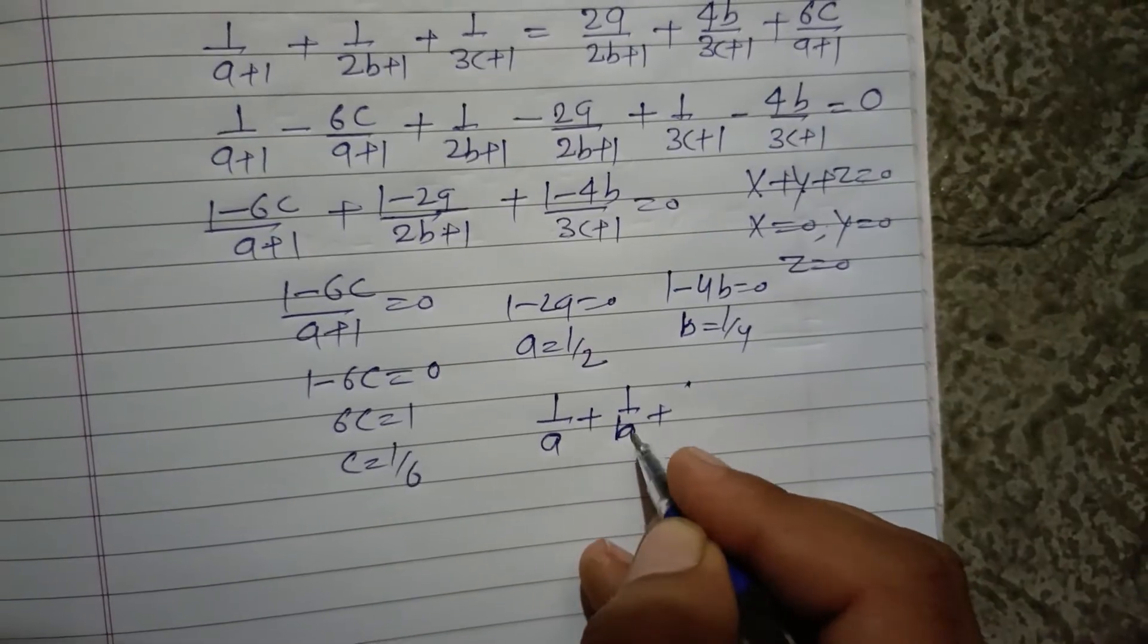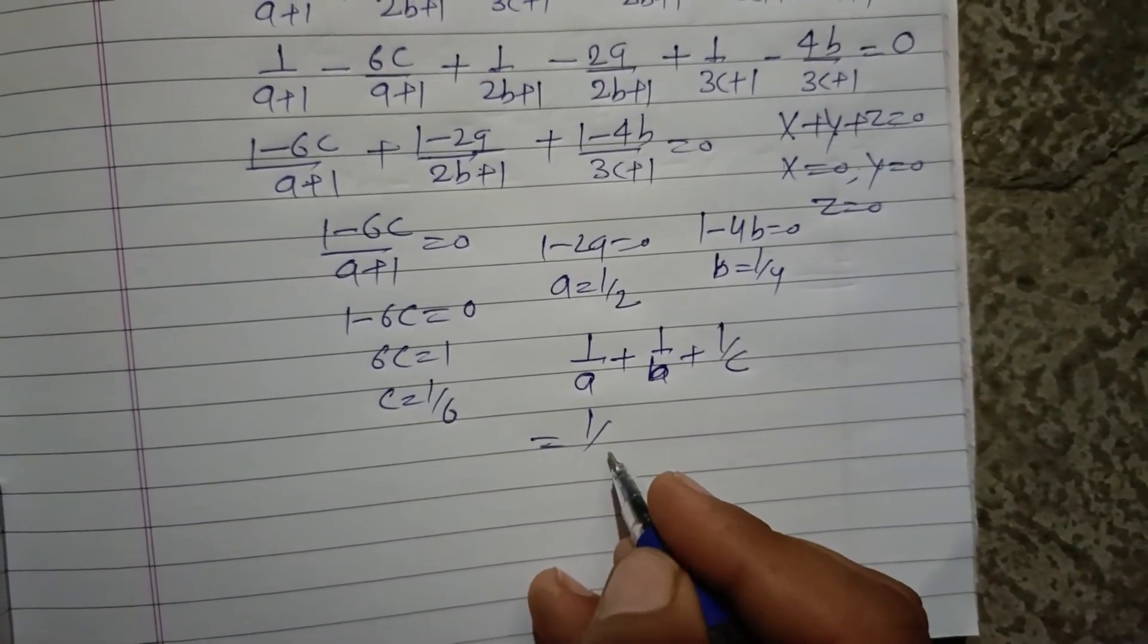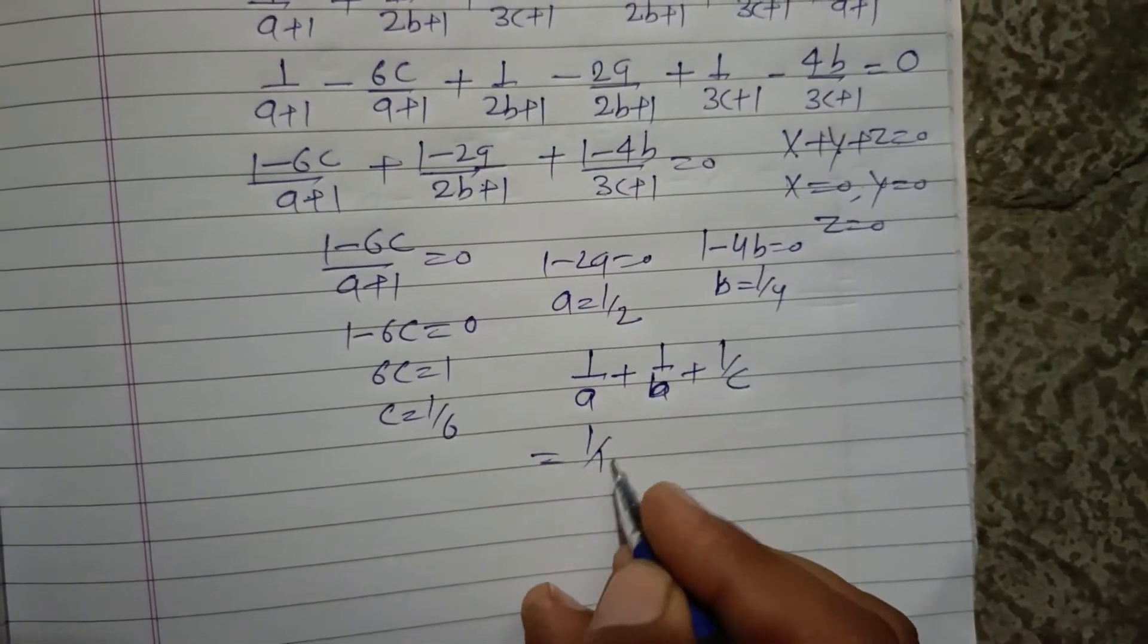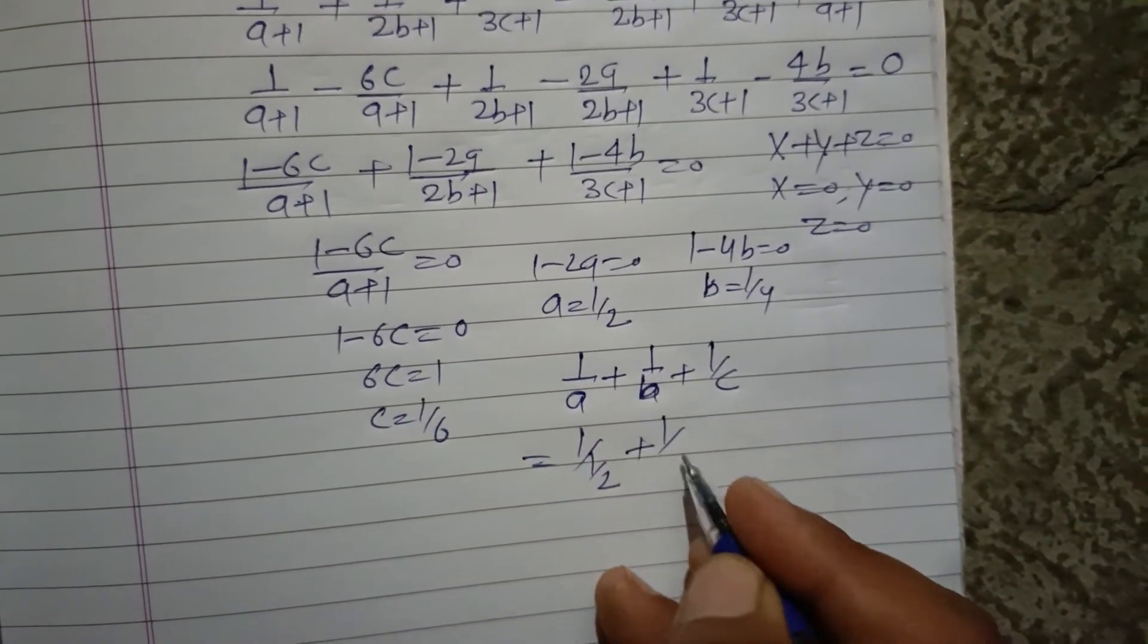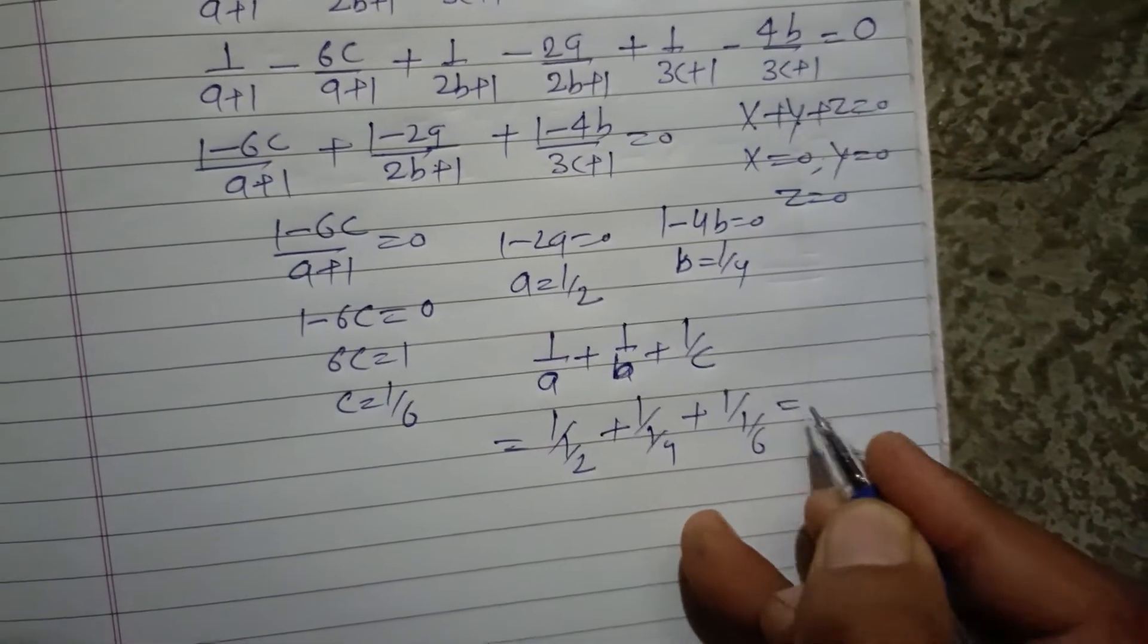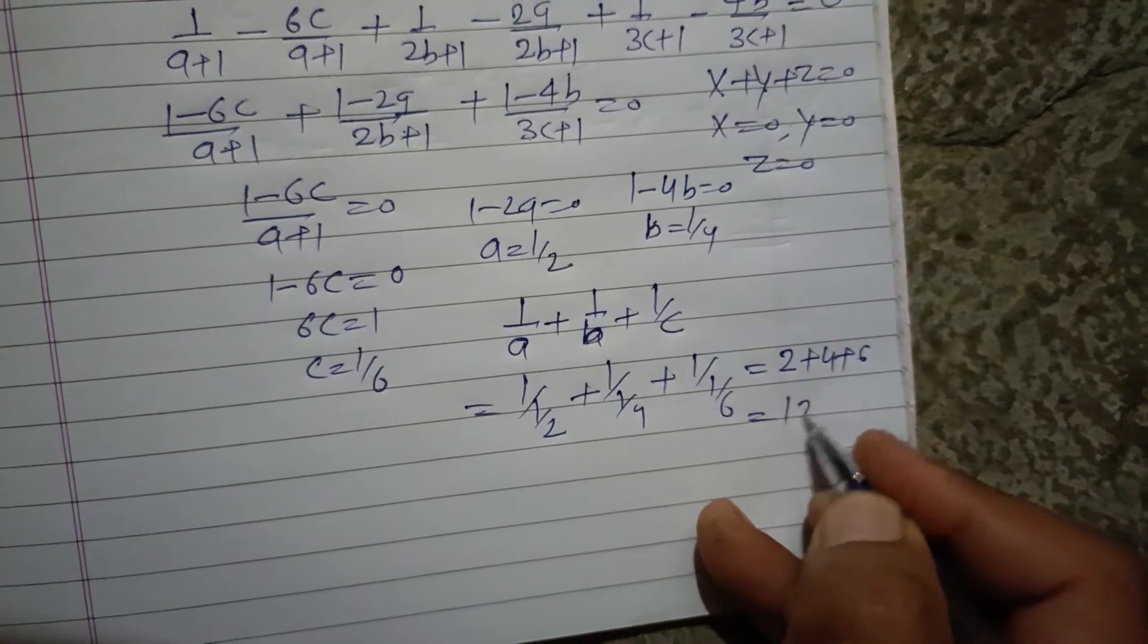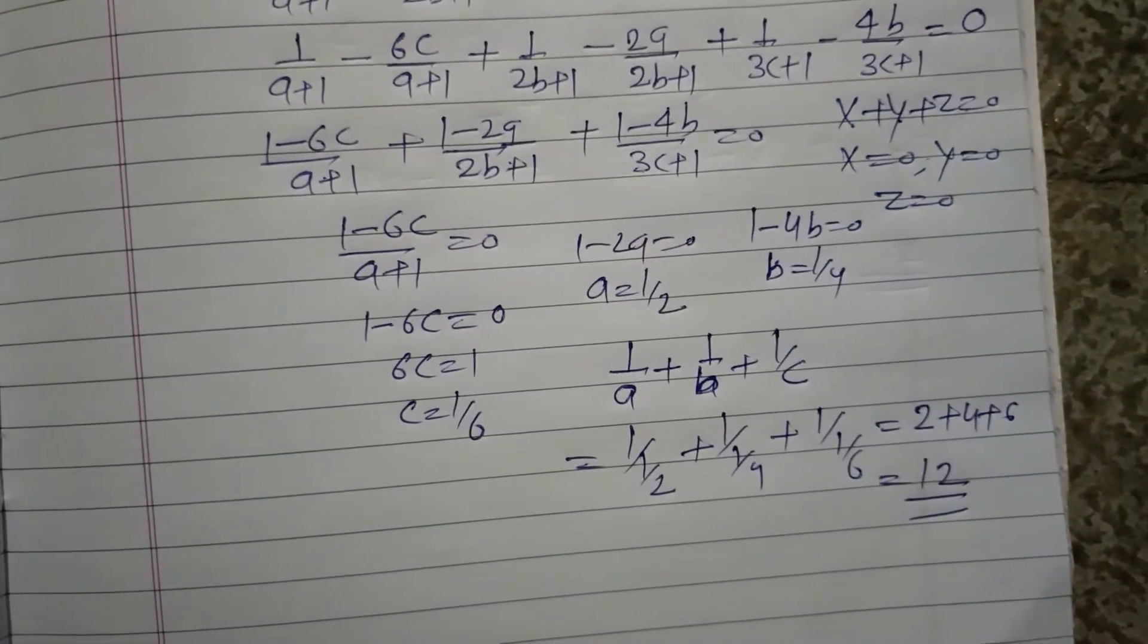Now the question is asking 1 upon a plus 1 upon b plus 1 upon c value. So 1 upon a value is 1 by 2, 1 upon b value is 1 by 4, and 1 upon c value is 1 by 6. This is 2 plus 4 plus 6, that is 12. So 12 is the correct answer of this question.